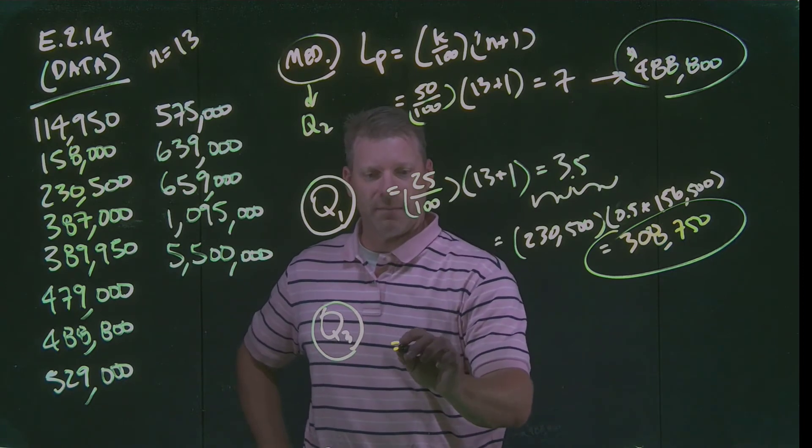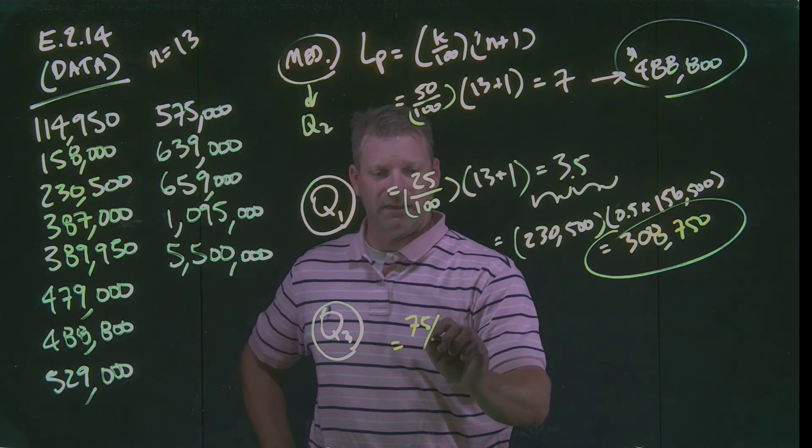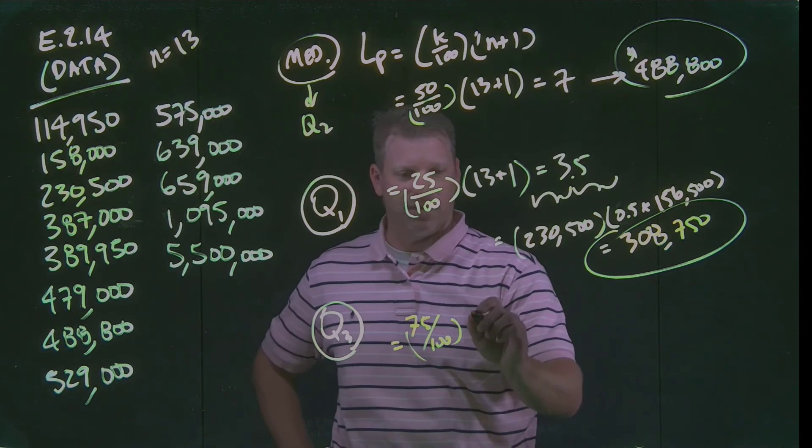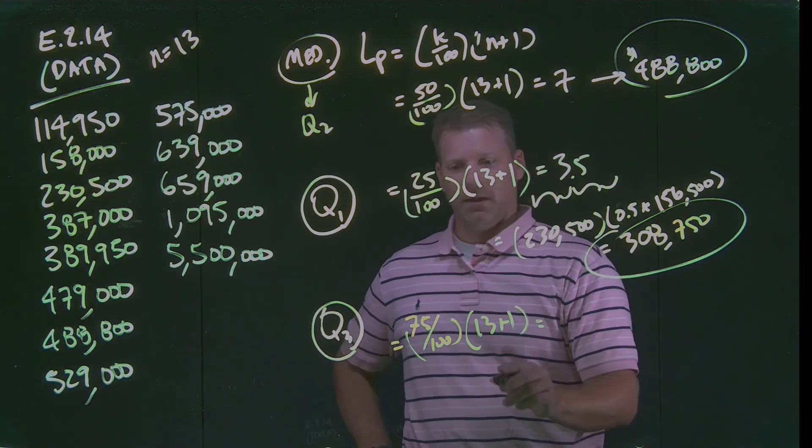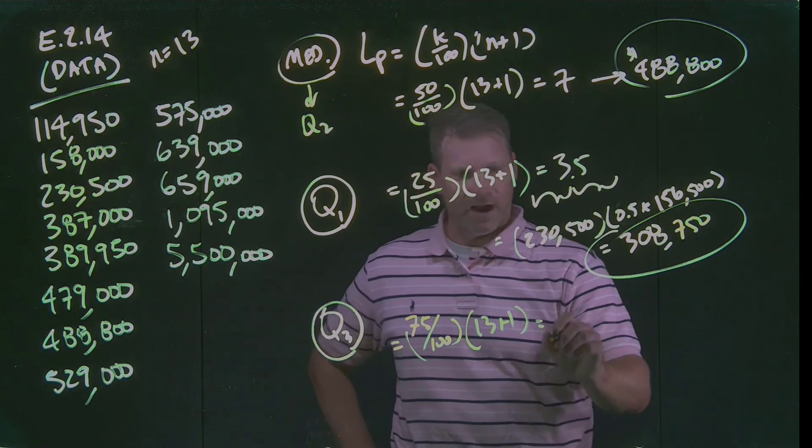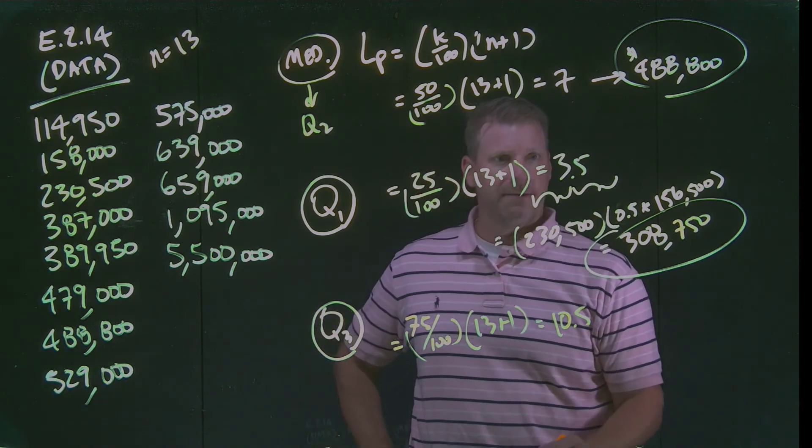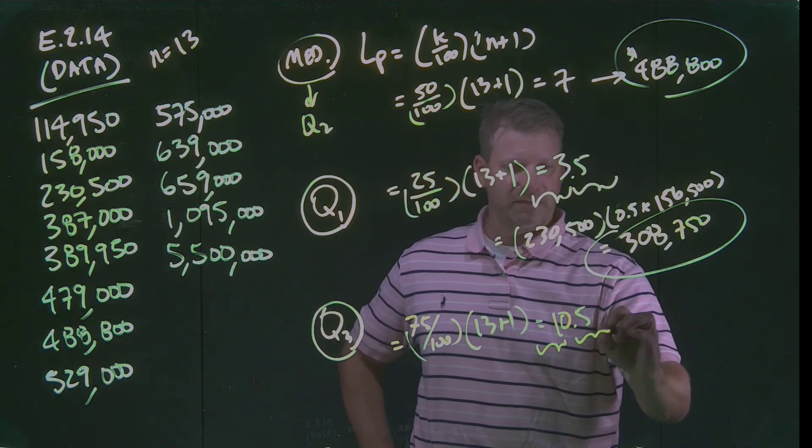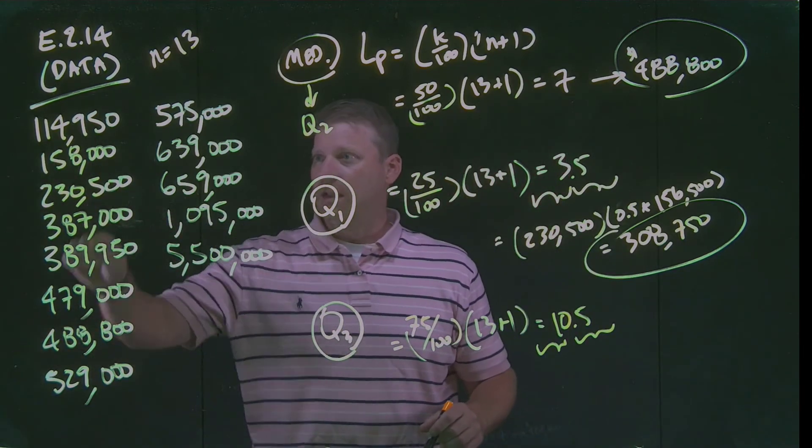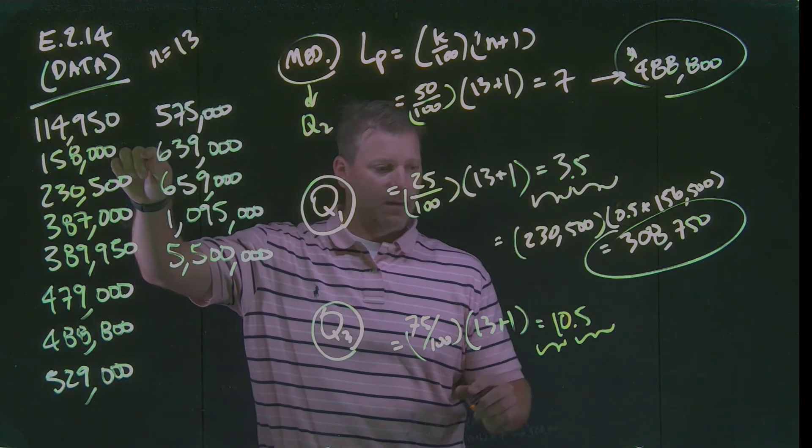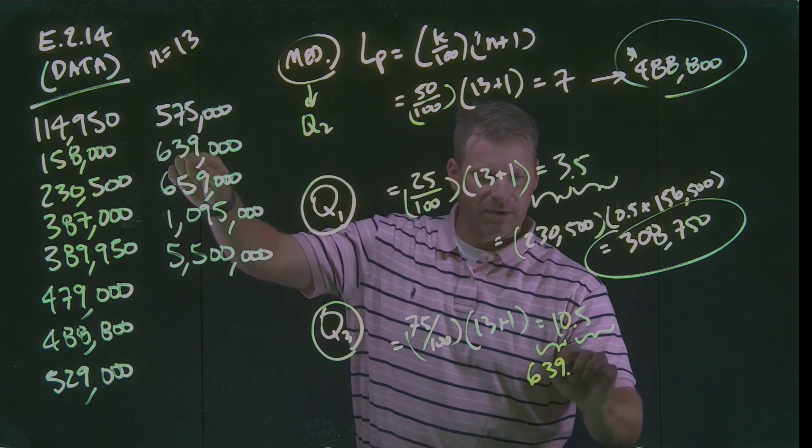My third quartile boundary is 75th percentile, lines up to that 75 out of 100 times 13 plus 1. Now I've got, again, 14 times 0.75 gets me to 10.5. The same issue here. I've got to split this number up. I'm going to go in and find the 10th data point. So we were at 7, 8, 9, 10. The 10th data point is $639,000.